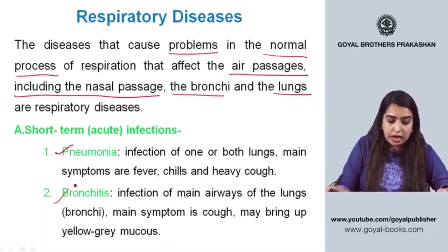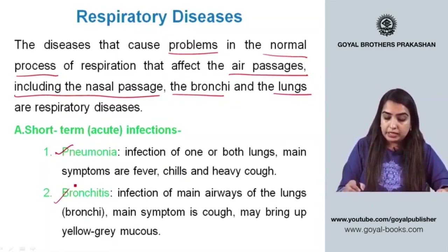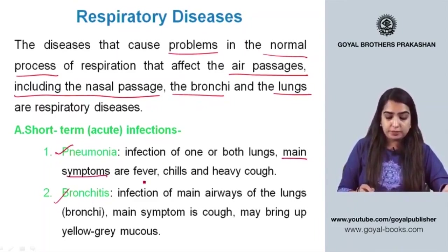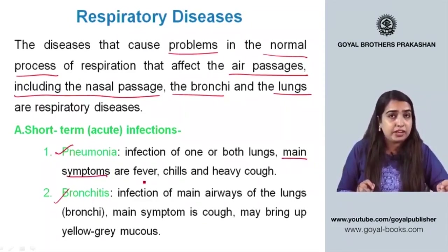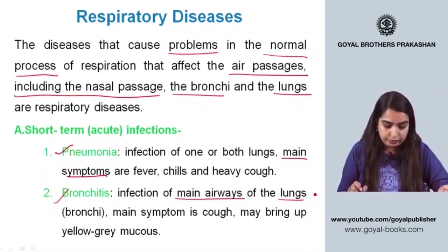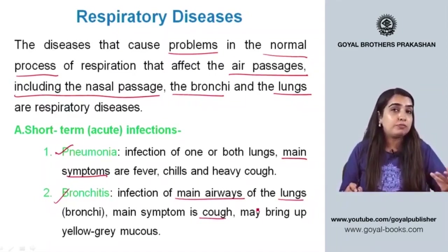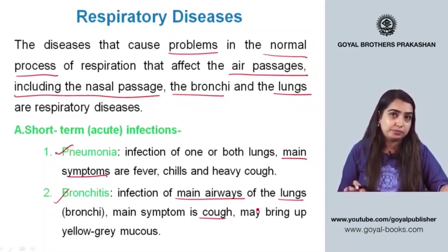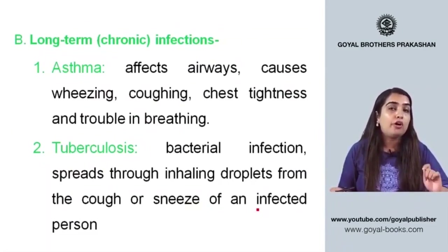Pneumonia is an infection of one or both lungs, with main symptoms including fever, chills, and heavy cough. Bronchitis is an infection of the main airways of the lungs — the bronchi — with symptoms including cough and production of yellow-grayish mucus.